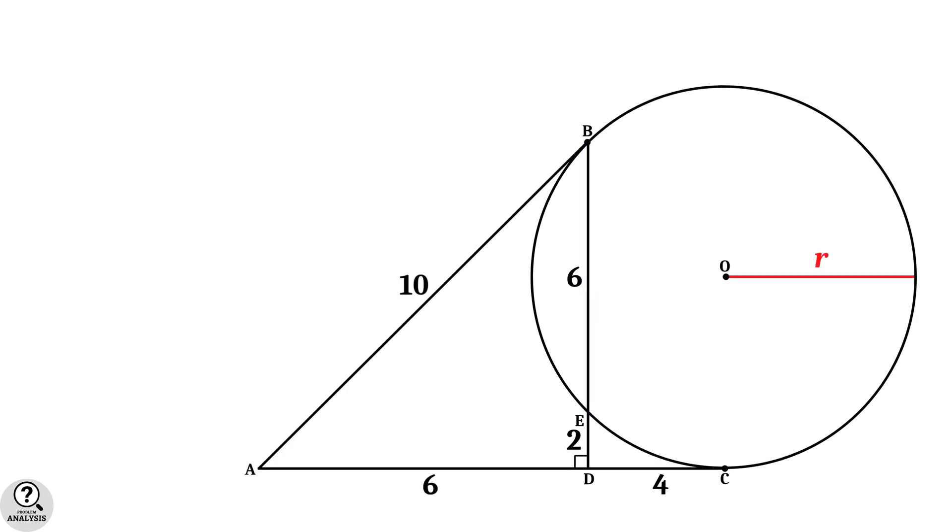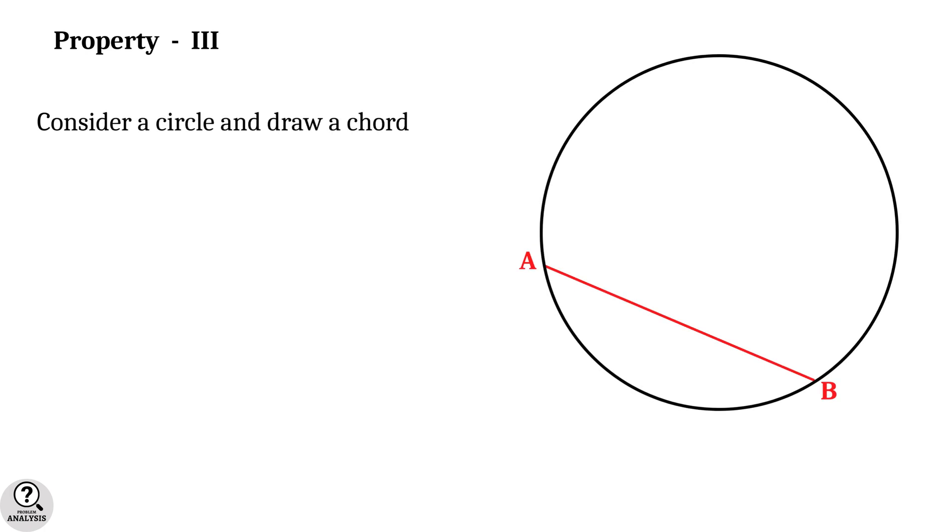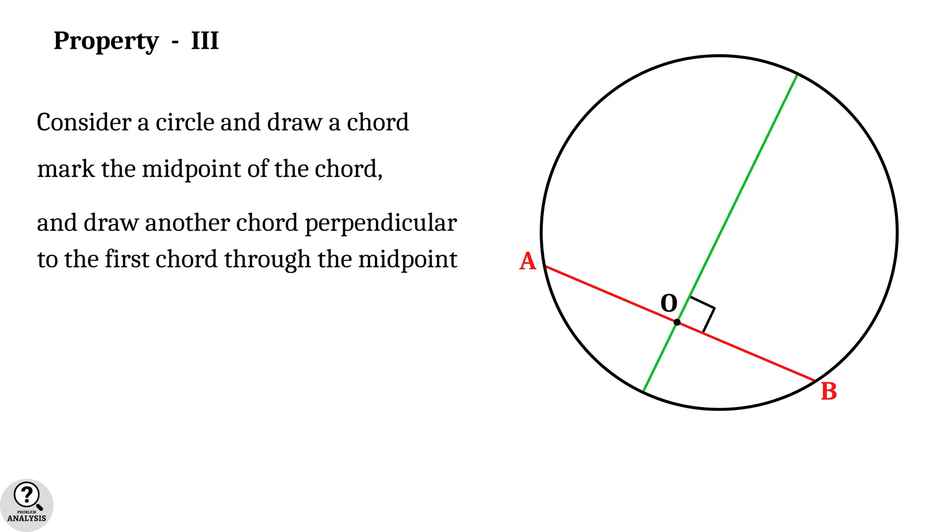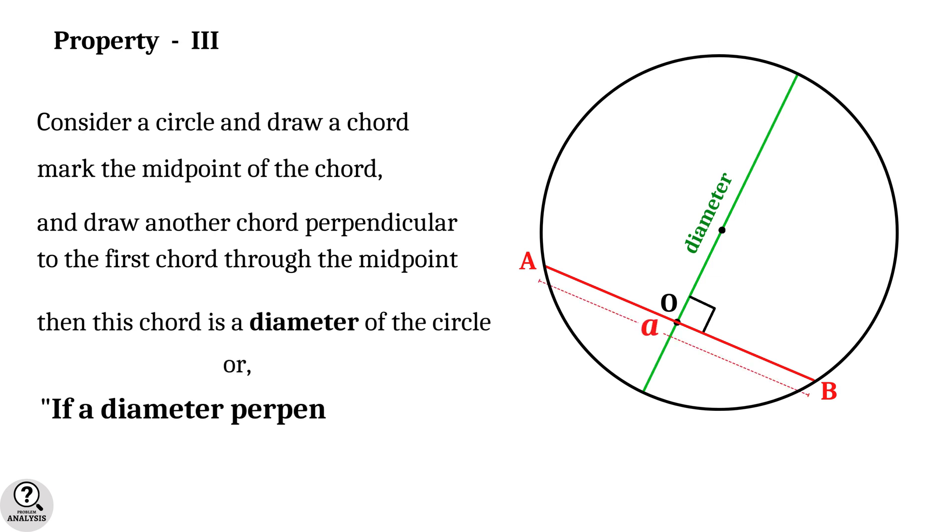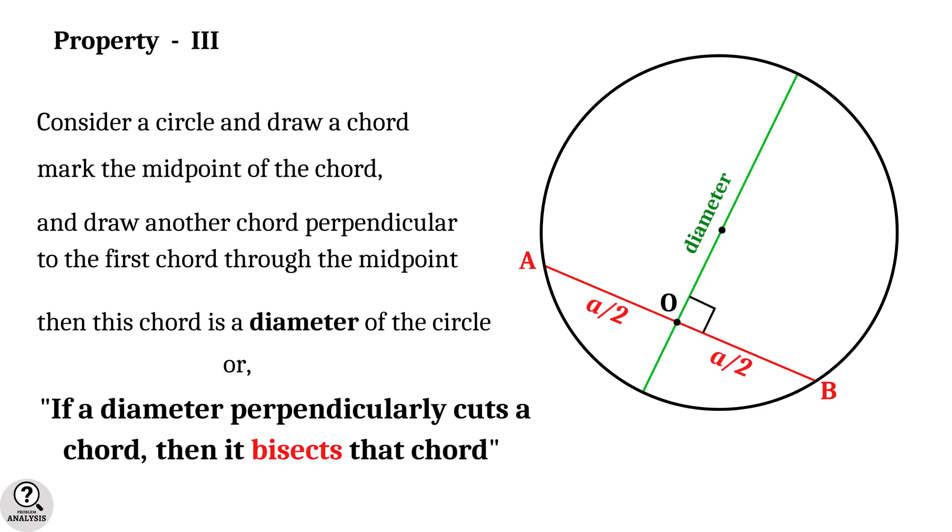Now come back to the figure. And it's time to see an important property of chords in a circle. So, here is the third property in our problem. Consider a circle and draw an arbitrary chord. Now mark the midpoint of the chord. And draw another chord that is perpendicular to the first chord through the midpoint. Then the fact is this chord will be a diameter of the circle. Or in another way, if a diameter or a radius perpendicularly cuts a chord then it bisects that chord.